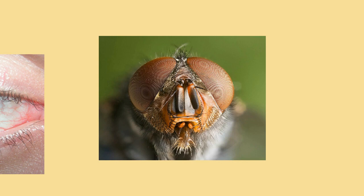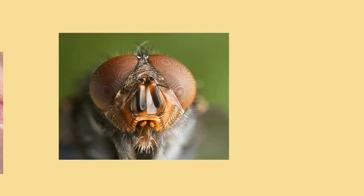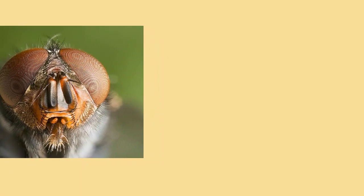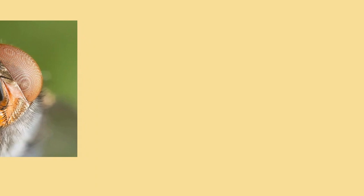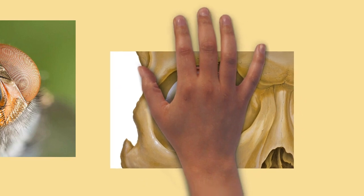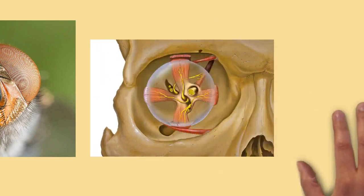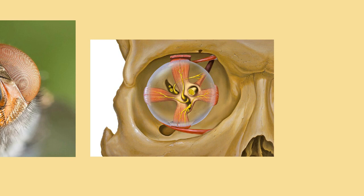A compound eye may consist of thousands of individual photoreceptor units or ommatidia (singular: ommatidium). The image perceived is a combination of inputs from the numerous ommatidia — individual eye units — which are located on a convex surface, thus pointing in slightly different directions. Compared with simple eyes, compound eyes possess a very large view angle, and can detect fast movement and, in some cases, the polarization of light. Because the individual lenses are so small, the effects of diffraction impose a limit on the possible resolution that can be obtained, assuming that they do not function as phased arrays.